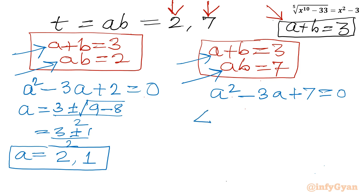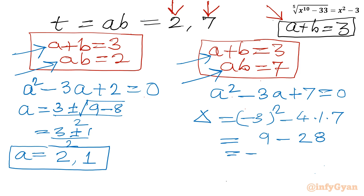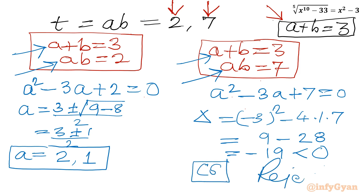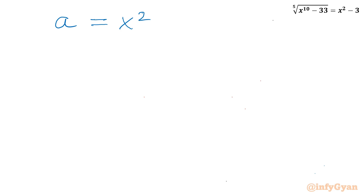Since the discriminant of the second system is negative, it generates only complex solutions. We reject it since we are calculating real solutions. From the first system, a equals 2 and a equals 1. Since a equals x squared, taking square roots both sides gives x equals ±1 and x equals ±√2. These are our final solutions.